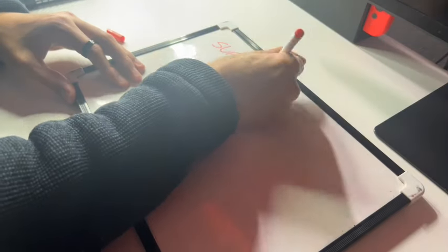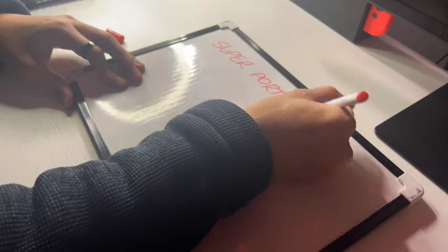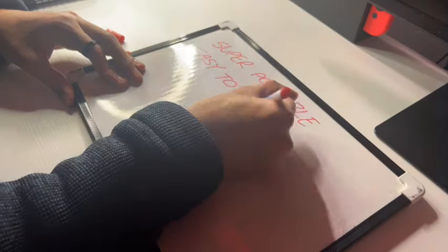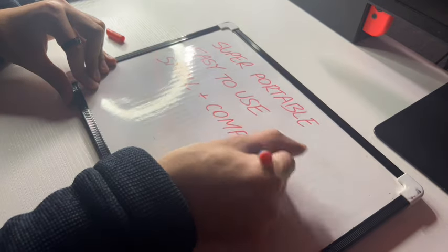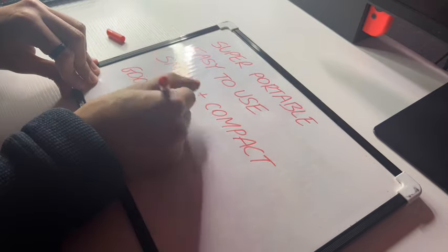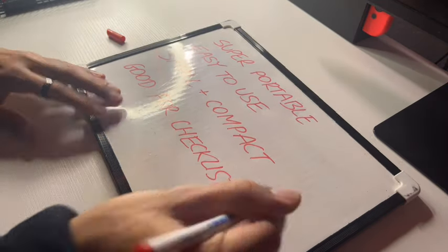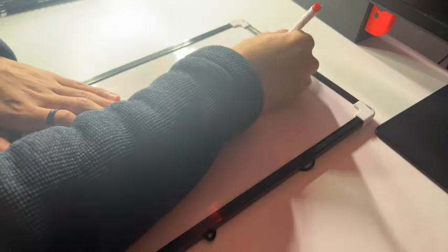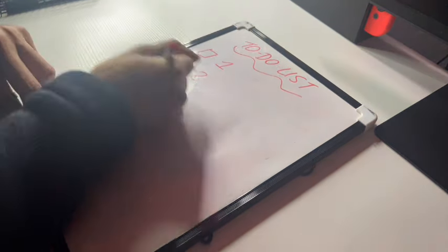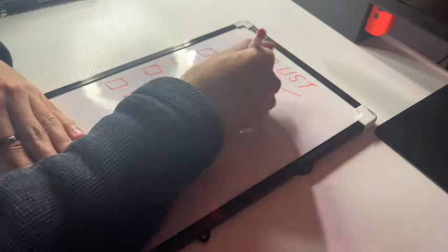The second whiteboard I use is my small portable whiteboard that fits in my backpack. I use it in school and sometimes outside, or just to write checklists. When I get home I switch to my larger one and use the small one as a mini checklist.